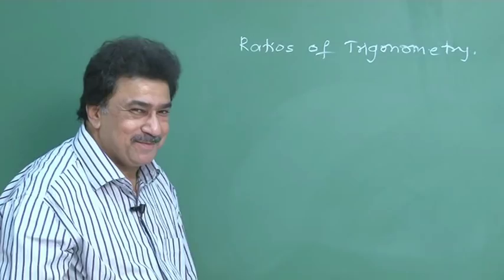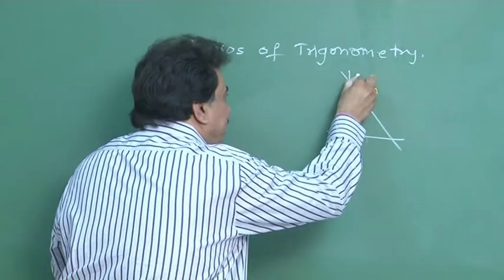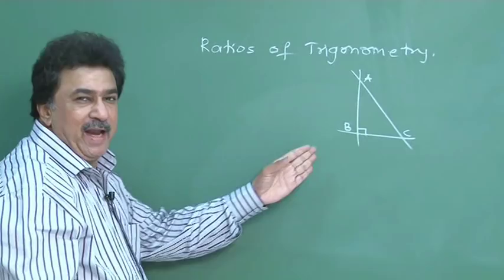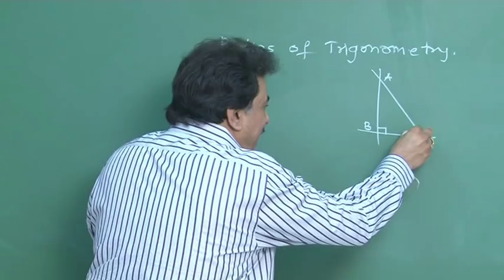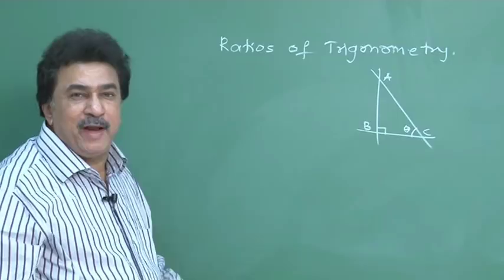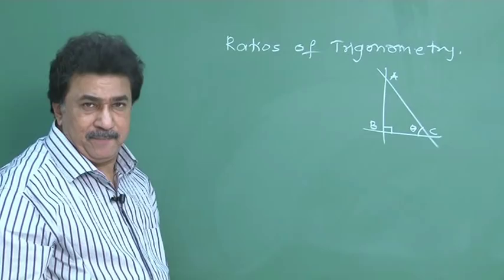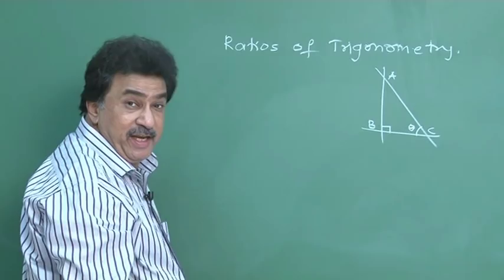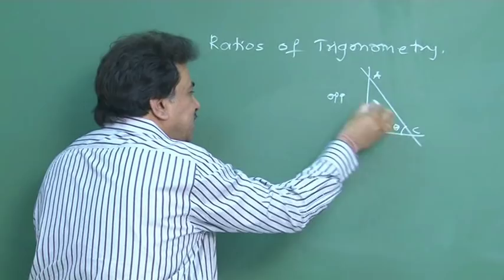Let the required triangle be triangle ABC with angle B at 90 degrees. When I say at 90 degrees, angle B is 90 degrees. And let me take angle C as theta. This is the one angle I have taken, which will decide all the ratios. When you see this figure very carefully, the side opposite to the taken angle — that is angle C theta — opposite to it is AB. This is the opposite side.